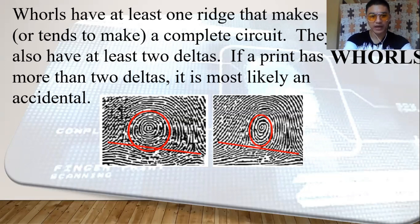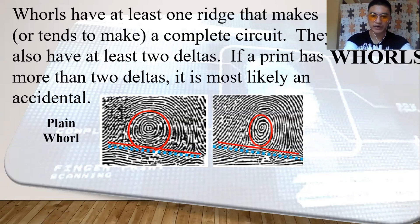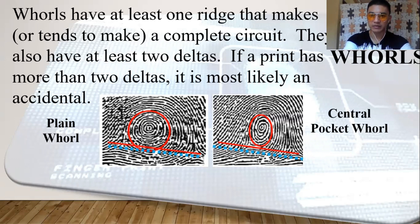Let us place an imaginary line from one delta to another delta. Since the figure shows that there are curved ridges touching the line, this figure is a plain whorl. On the other figure, placing an imaginary line from the left delta towards the right delta, it shows no center core ridges touching the line — thus it is a central pocket whorl.